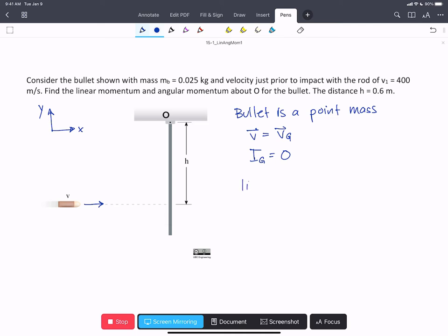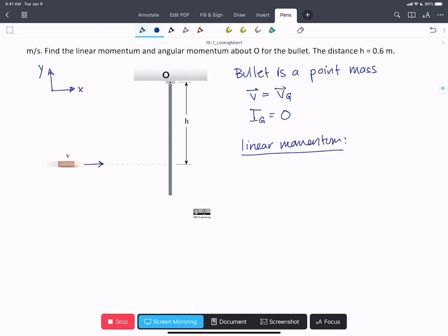So if we consider linear momentum first, our linear momentum J is going to equal M times the velocity at the center of gravity.